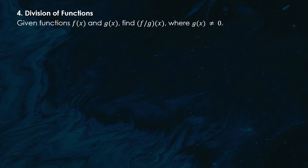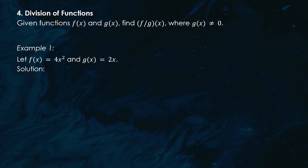Finally, division. When dividing functions, we take f(x) and divide it by g(x), but here's the catch: g(x) cannot be 0. For example, let f(x) = 4x² and g(x) = 2x. To find the quotient, (f ÷ g)(x) = 4x² ÷ 2x. Simplifying this, we get 2x. So the result of dividing f(x) by g(x) is 2x.